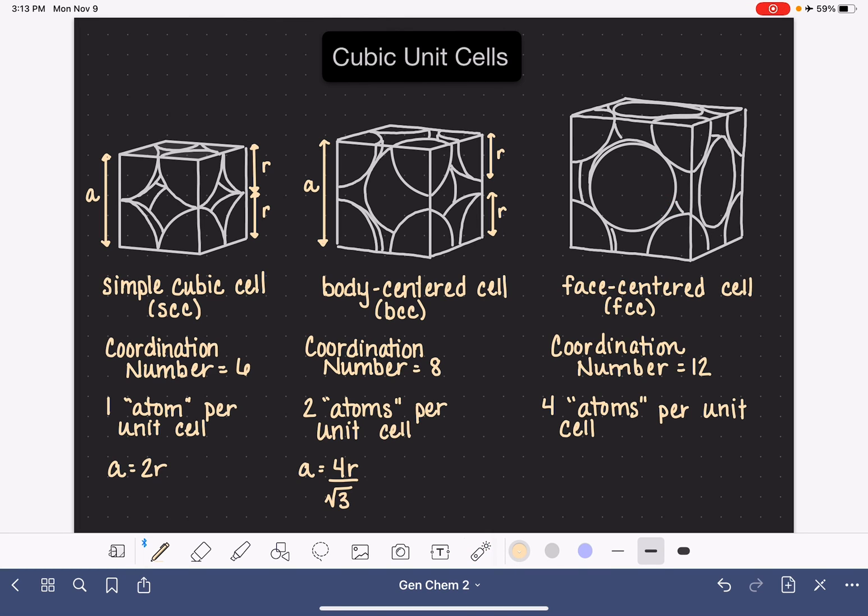Now, last but not least, let's look at the relationship between the edge length A, which I'm going to draw out here, and the radius R. The same type of problem we have as with the body-centered cell in that no atoms actually span all the way across an edge length. So there's a gap along all of the edge lengths, which means we have to use some geometry to come up with the relationship between the edge length A and the radius R.